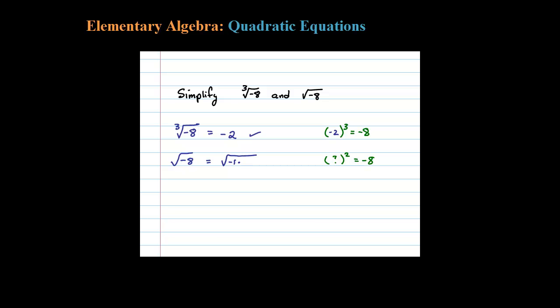I'm going to rewrite negative 8 as negative 1 times 4 times 2. The square root of negative 1 is defined as i, the imaginary unit. Square root of 4 is 2, and then what's left inside the square root is that 2, so times the square root of 2. Now multiplication is commutative, so let me rewrite this. It looks a little better: 2i square root of 2.